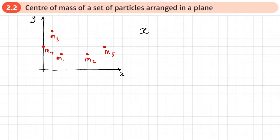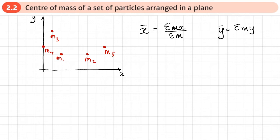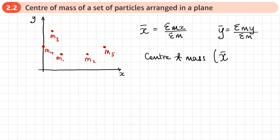We need to calculate X̄ as the sum of each mass times its X distance from the origin, divided by the sum of the masses. We also need to calculate Ȳ: for each of the masses, we multiply each mass by its distance in the Y direction from the origin, divided by the sum of the masses. So we have two sets of calculations, which will give us a coordinate for the centre of mass: (X̄, Ȳ).